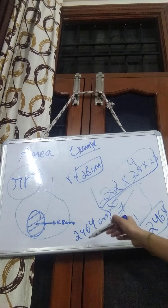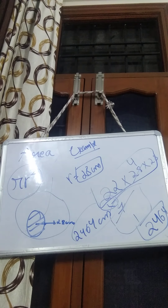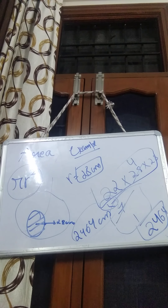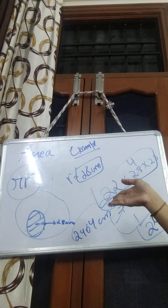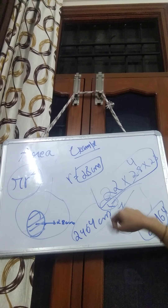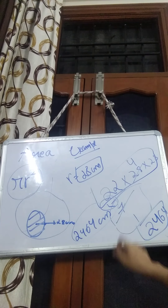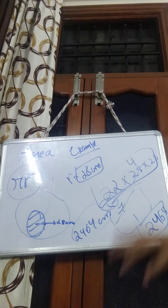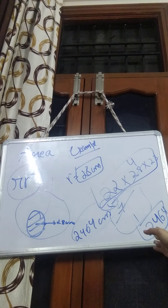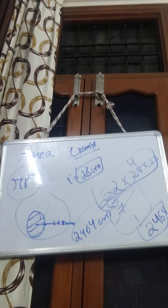Now I'm sure you understand what the perimeter of a circle is — it's called the circumference — and how to find it using the formula 2πr. You also know the area formula, which is πr². The application and rules are clear. Thank you, bye-bye!